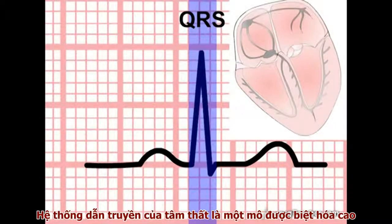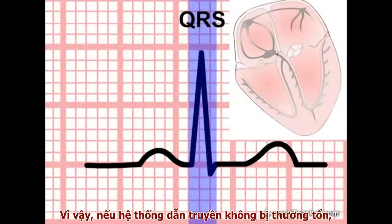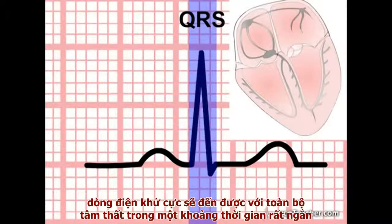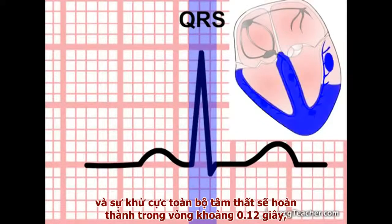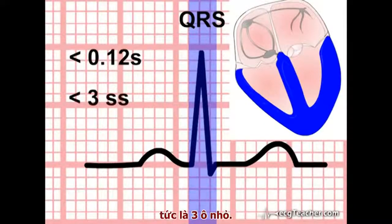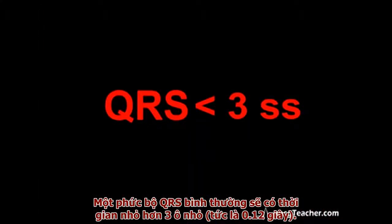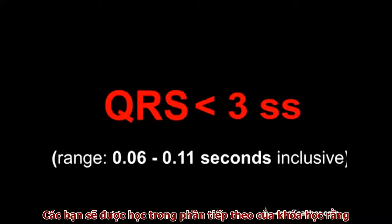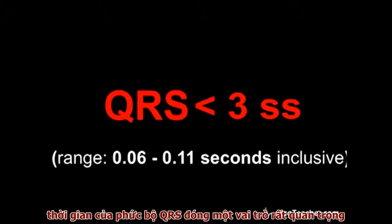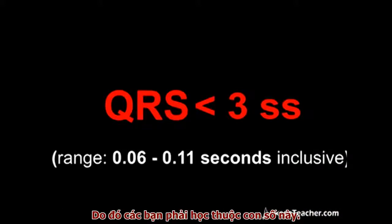The conducting system of the ventricles is highly specialized tissue capable of transmitting the depolarization wave rapidly around the chambers. With an intact conducting system, depolarizing current is delivered to all sectors of the ventricles in a very short time period, and ventricular depolarization of all regions is complete within 0.12 seconds — that is three small squares. A normal QRS complex is less than three small squares in width. The width of the QRS complex is absolutely central to the ECG interpretation of life-threatening arrhythmias. You must remember this number.